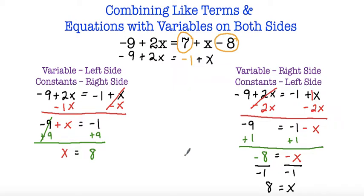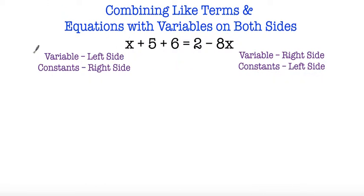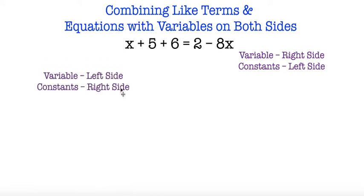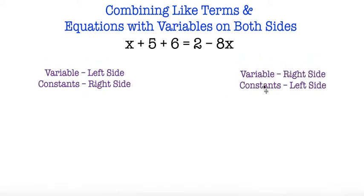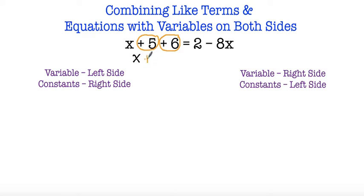As long as we keep our equations balanced you'll get the same answer. So here I have another example: x plus 5 plus 6 is equal to 2 minus 8x. The first thing we're going to do is check both sides for like terms. On the left side I have x plus 5 plus 6 — I have like terms: positive 5 and positive 6. So I end up with x plus 11 is equal to 2 minus 8x. On the right side those are not like terms so I just rewrite it.